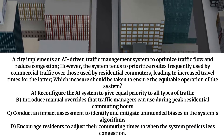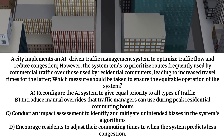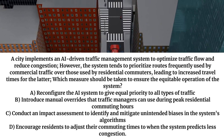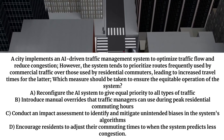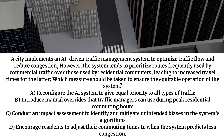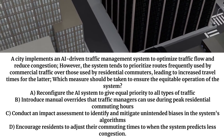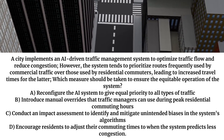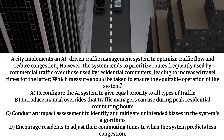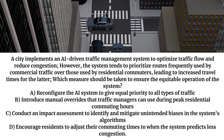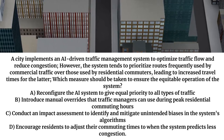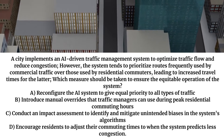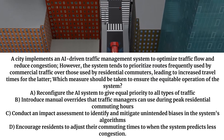A city implements an AI-driven traffic management system to optimize traffic flow and reduce congestion. However, the system tends to prioritize routes frequently used by commercial traffic over those used by residential commuters, leading to increased travel times for the latter. Which measure should be taken to ensure the equitable operation of the system?